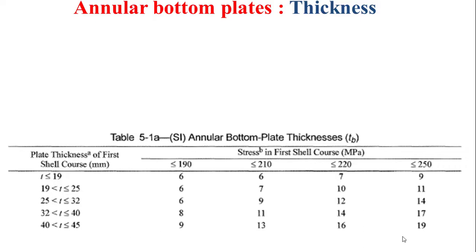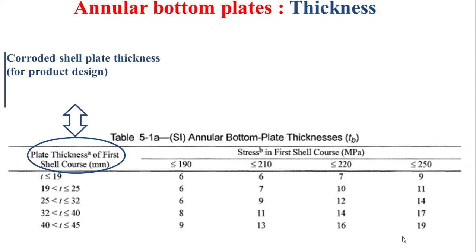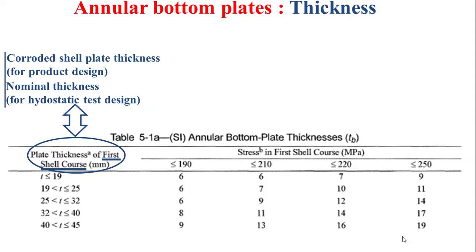Table 5-1 has two entries. The first entry is the plate thickness of the first shell course. This plate thickness is associated with the corroded shell plate thickness for product design, or the nominal thickness for the hydrostatic test design. The considered thickness is related to the first shell course.